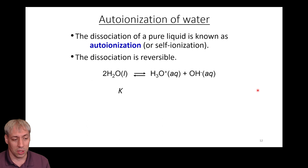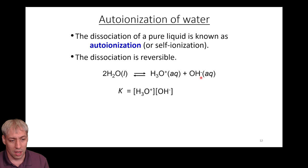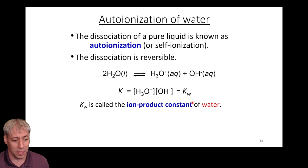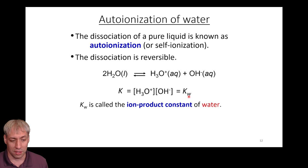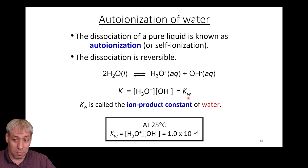We can write the equilibrium expression as products over reactants. Products are H3O+ and OH-. The reactant is liquid water, which doesn't appear in the equilibrium expression since it's a liquid. So K equals [H3O+][OH-]. This is the auto-ionization constant, also referred to as Kw — the ion product constant of water — which is why we use the W subscript.